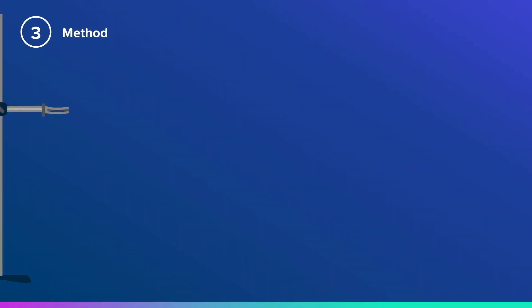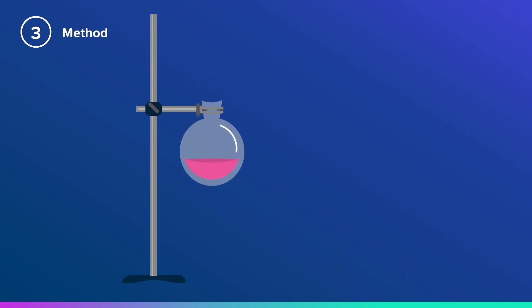Clamp your round-bottomed flask and insert the three-way adapter. Then pop your thermometer in the top of the three-way adapter.